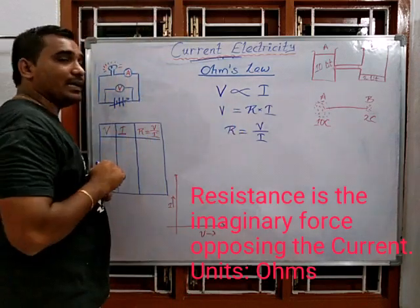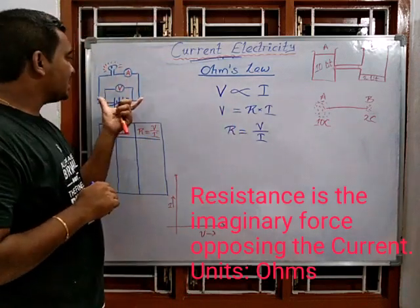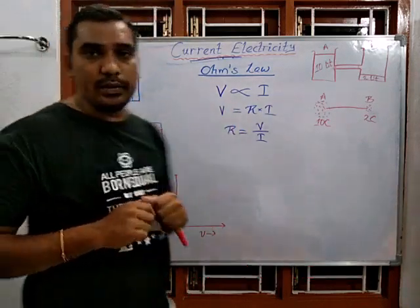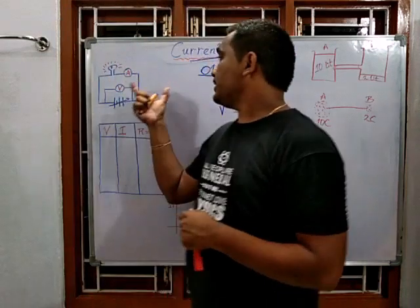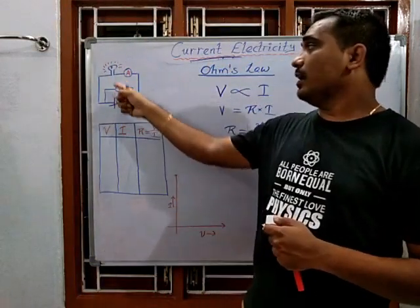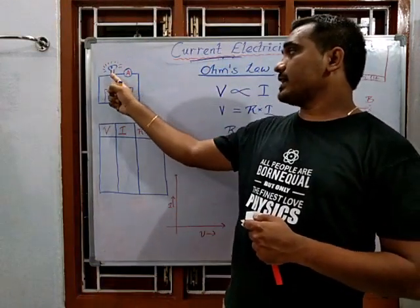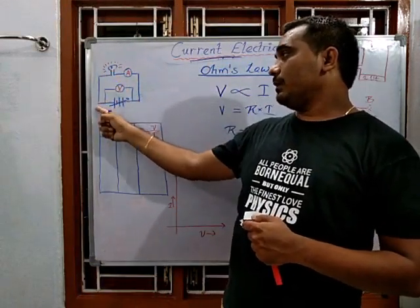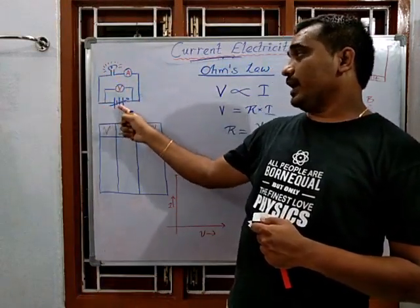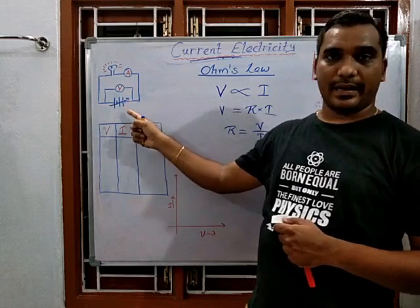If we connect a circuit in this manner — a bulb connected to a variable battery where I can change the voltage — along with a voltmeter in parallel and an ammeter in series to measure different voltages and corresponding currents.